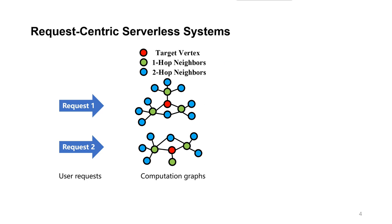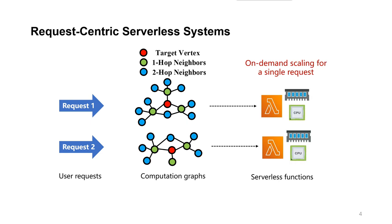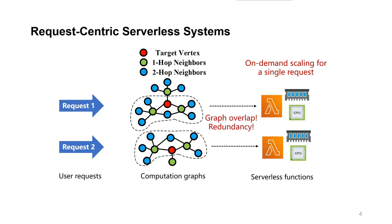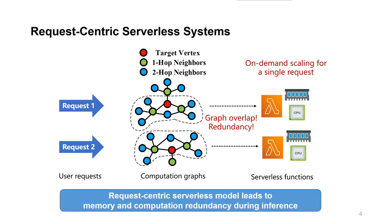The request-centric serverless solution provides on-demand resources for each request based on the size of its computation graph. However, due to the overlap between computation graphs corresponding to requests arriving at the same time frame, the request-centric serverless solution leads to significant memory and computation redundancy during inference.